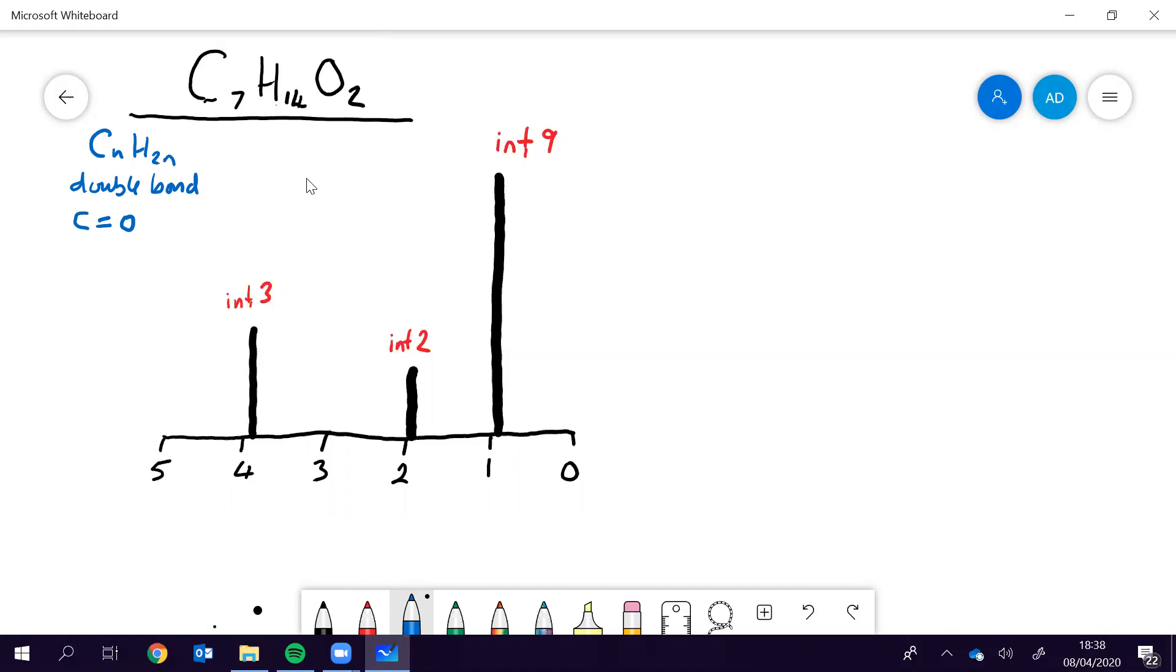So we have to try and work out what this structure is, looking at the number of hydrogens there. You can see that there's not that many peaks, really. Here, we've got this peak here with an integrated value of nine. And so you've got nine hydrogens in the same environment as each other.